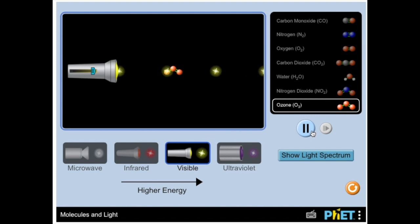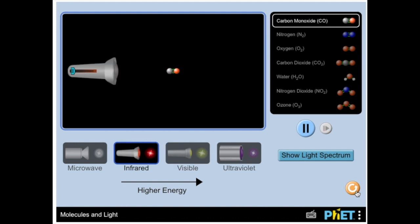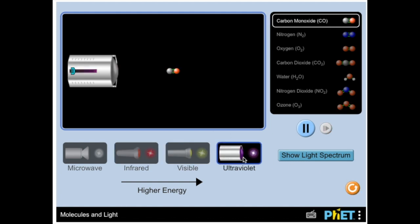At this point you should have the entire column completed for visible light. Going to reset it and now set it to our final column, the ultraviolet wavelength.